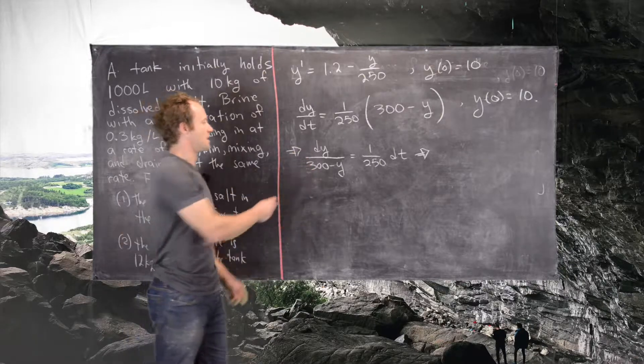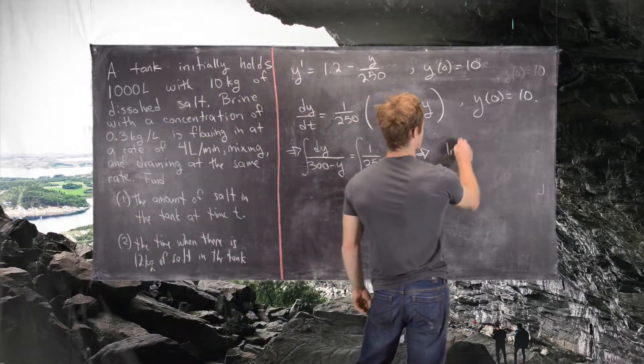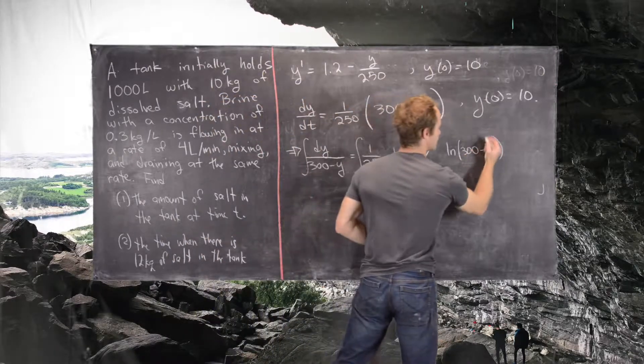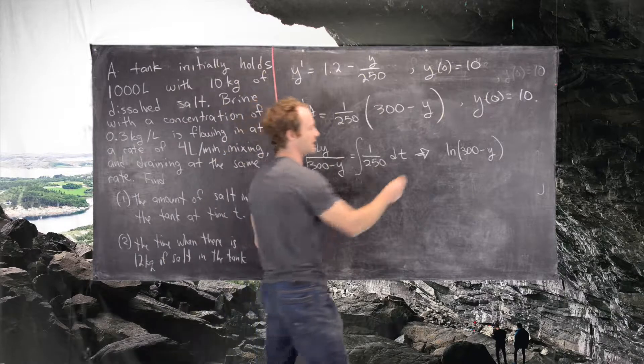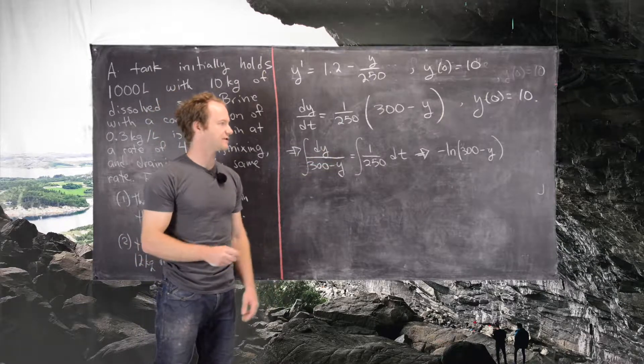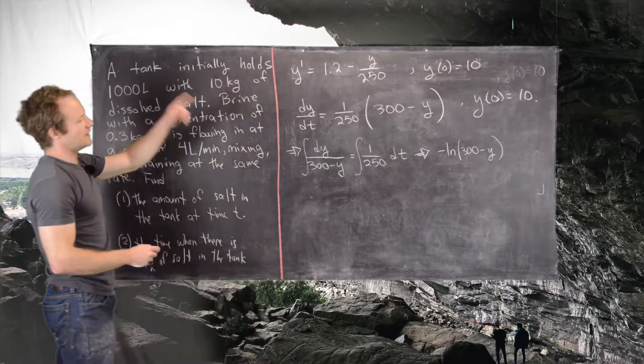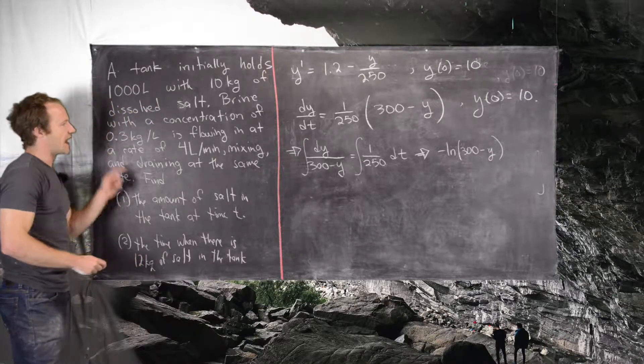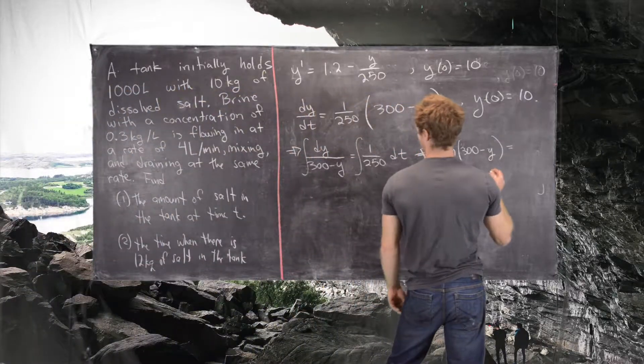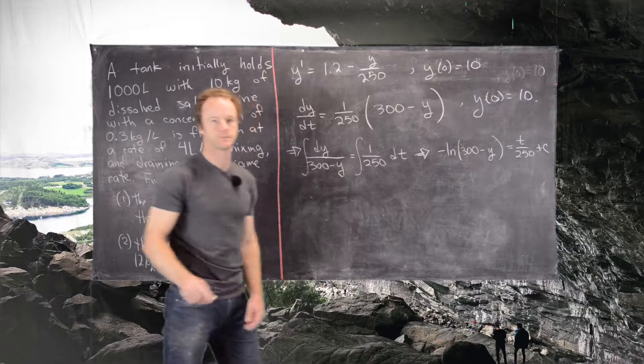We have over on this side of the equation, it looks like something with a natural log. So we get a natural log of 300 minus y. But since we have a coefficient of minus 1 on the y, we need to include a negative sign in front of the natural log. Notice I haven't written absolute values around the 300 minus y, and that's because in this setup, y will never be bigger than 300, as if it's bigger than 300, that means we have gone higher than the concentration that's flowing into the tank, which is impossible. On the right-hand side, we have t over 250 plus a constant.